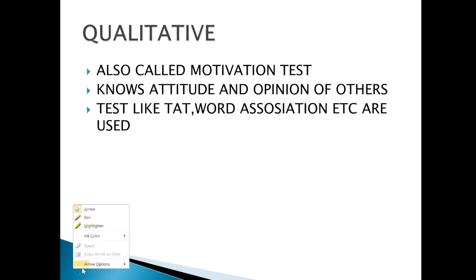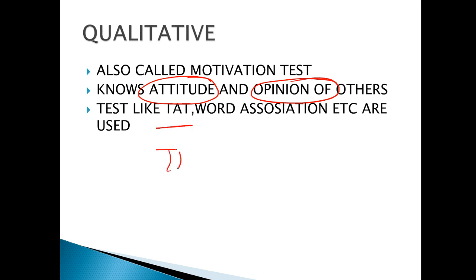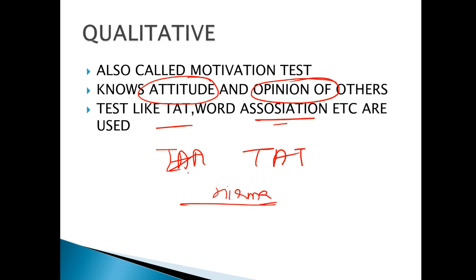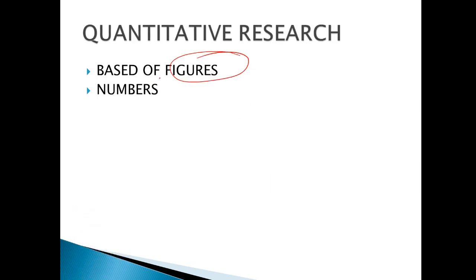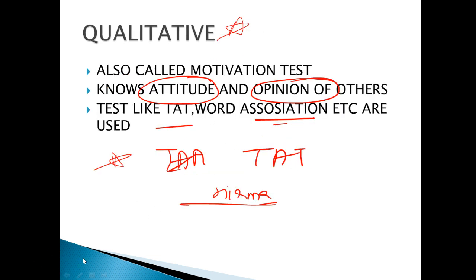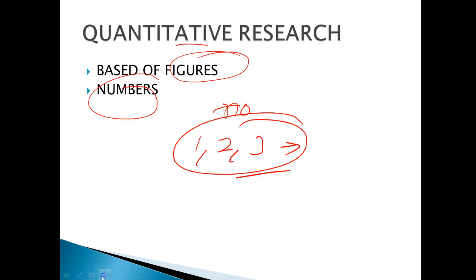The next point is qualitative research. There are two types: quantitative and qualitative. When we want to understand attitudes and opinions, we test them through tools like Thematic Apperception Test (TAT) or Word Association Test. For example, 'Sab ki pasand — Nirma' — what you associate with that prompt. This is qualitative research for customer-based studies. Quantitative research, on the other hand, is based on figures and numbers — how many male members, how many female — we can measure it in terms of one, two, three. But attitude cannot be measured numerically, so that is qualitative.